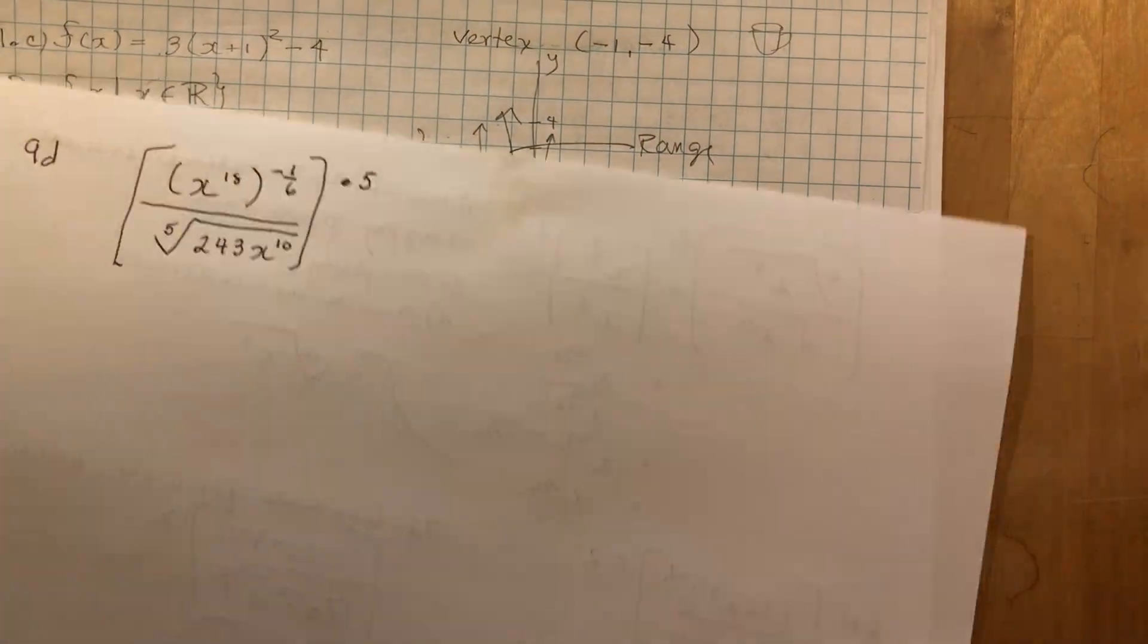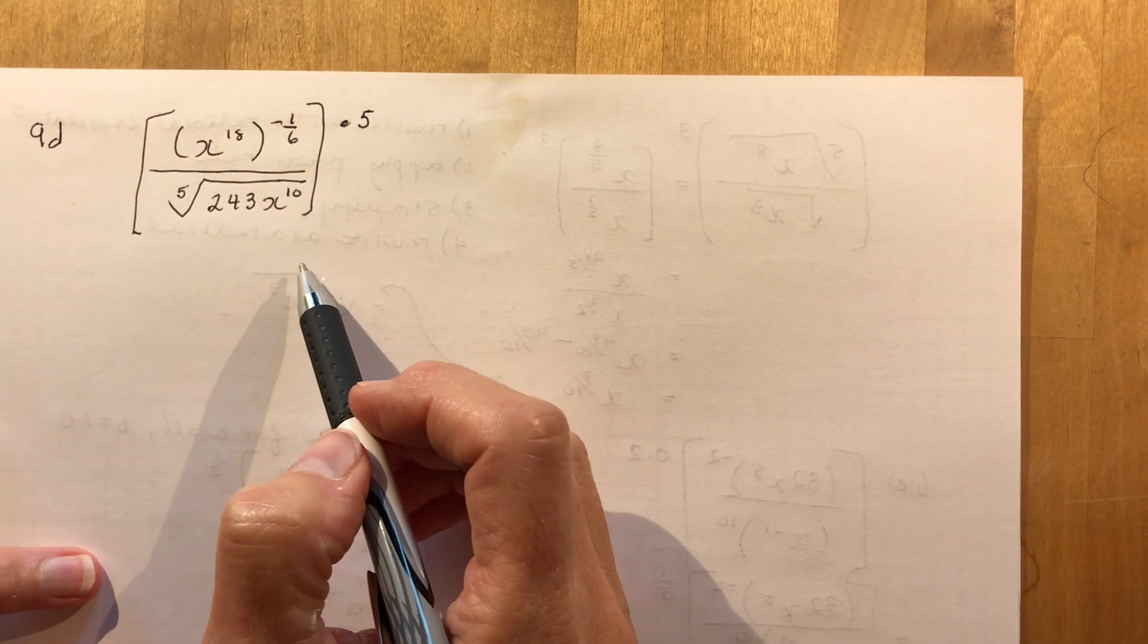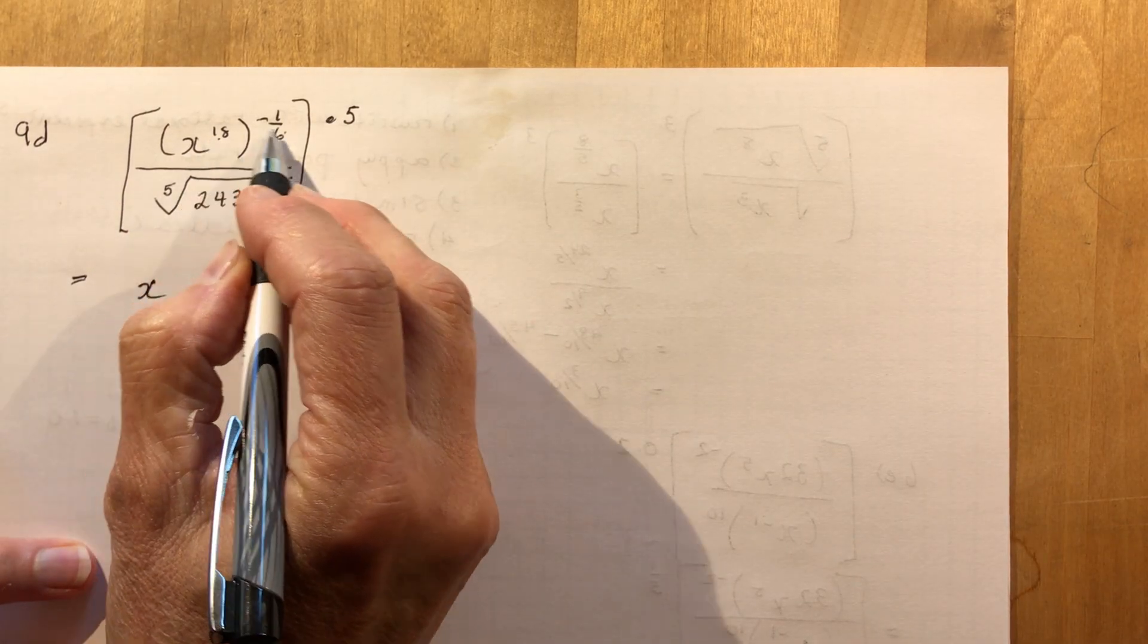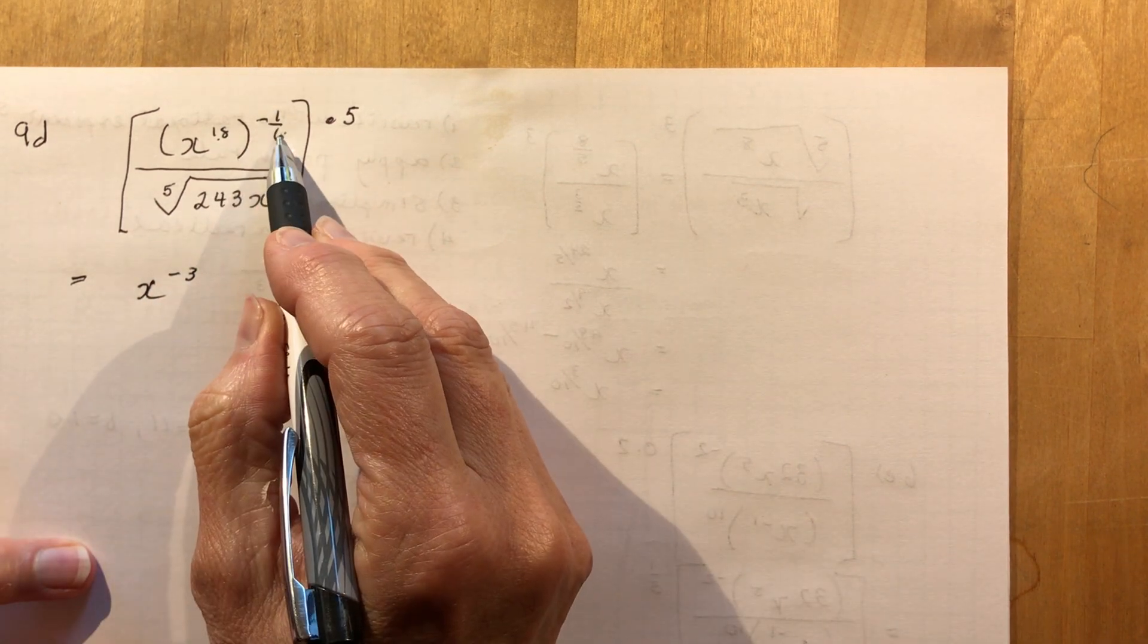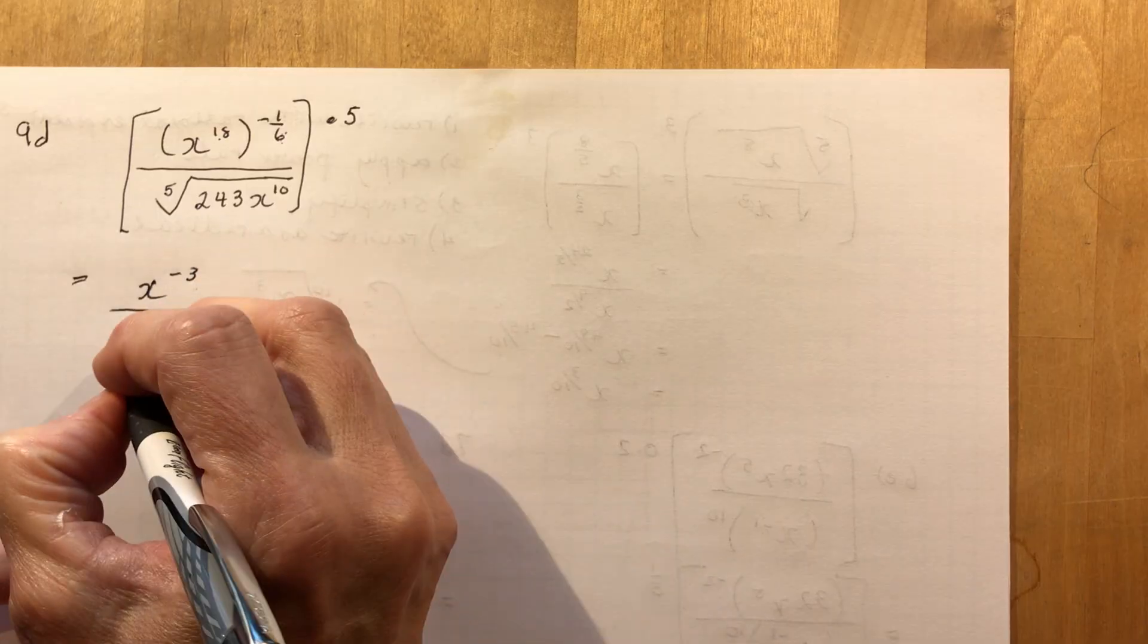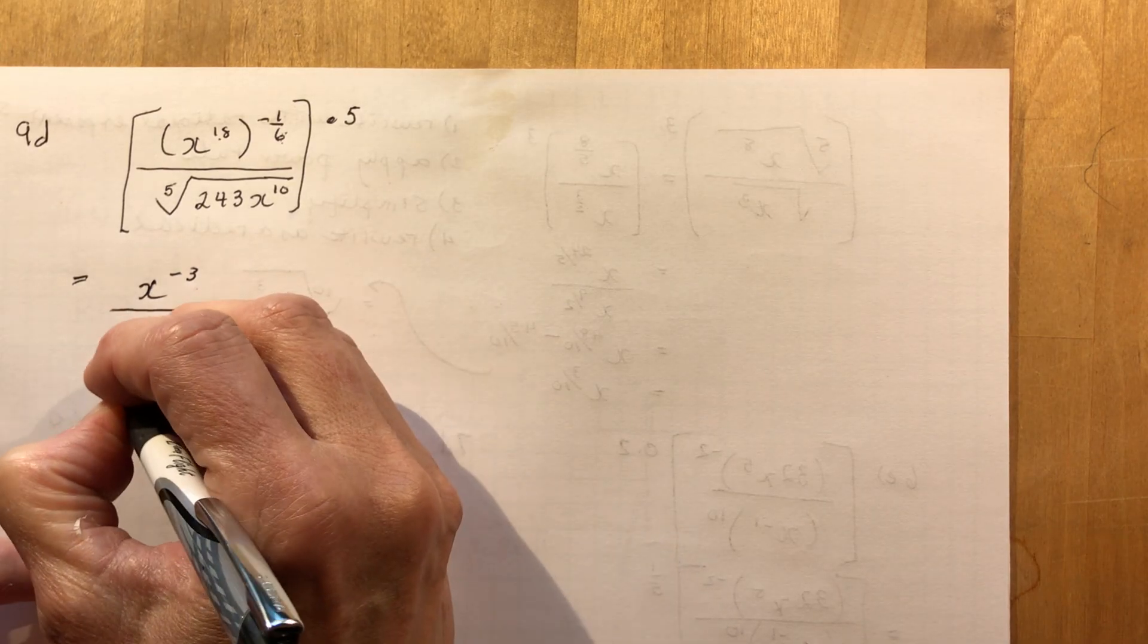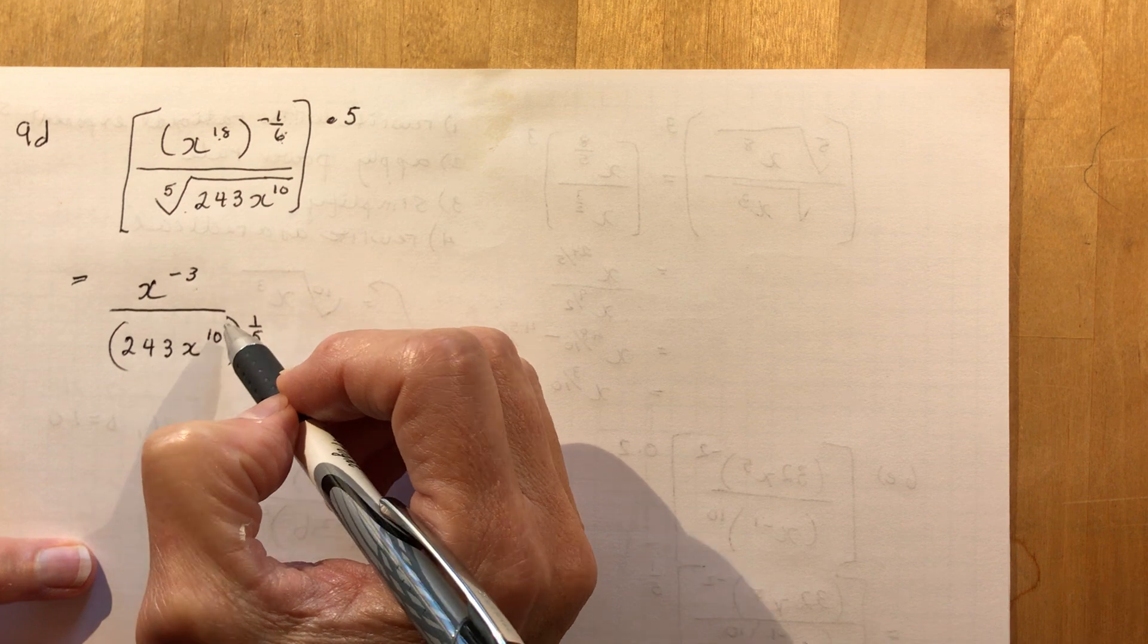Okay, one more and then I'm going to go for a kayak. It's a beautiful day here. So another really complicated looking one. And this time I would think, if you look at this to this power, there's no constant or anything, so it's really easy to simplify this part first. So I'm going to do that. 18 times 1 over minus 1/6, that would be x to the minus 3, right? 18 over 6 and it's negative. And in the denominator, I'm going to write this with a rational exponent. So that's 243x to the 10, and it's to the 1/5. You have to be careful with the constants. So you can't just pull that one away from the exponent, because this is the fifth root of this number and the fifth root of this. And this whole thing is to the 0.5 or 1/2.